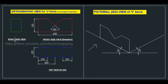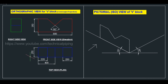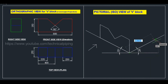Now we will consider the right side view. In the right side view there are no dimensions given, so we have to refer to the top view (plan). From the top view, the width of the V-block is 250 mm.